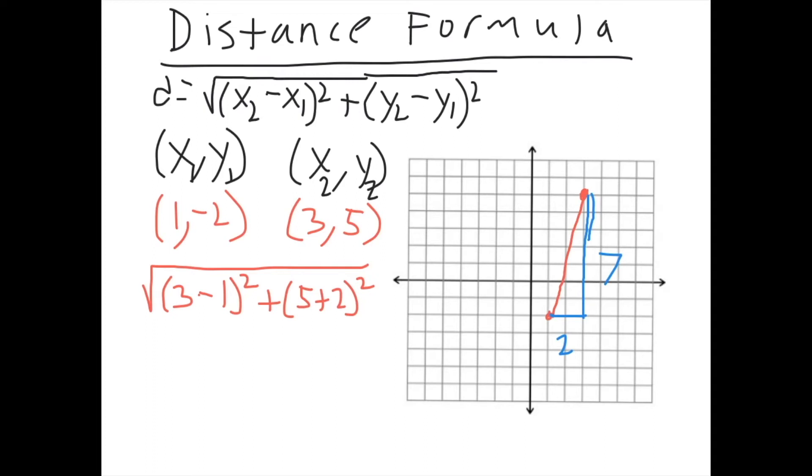So like we said, 3 minus 1 is 2, and 2 squared is 4. So we have the square root of 4 plus, and then 7 squared is 49. So the square root of 4 plus 49. 4 plus 49 is 53. And if you can simplify it any more, you should do that. However, in this case, 53 cannot be simplified any more. So the answer would just be the square root of 53. If you can simplify it any more, such as being able to pull out a perfect square, like we did when we were simplifying square roots, you would do that. But in this case, you can just leave it as square root of 53.